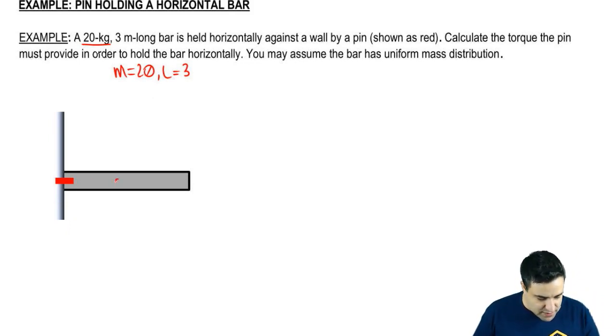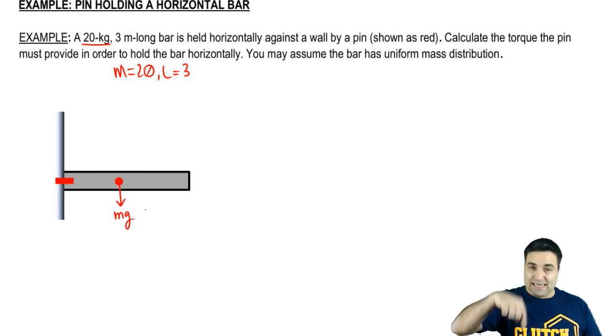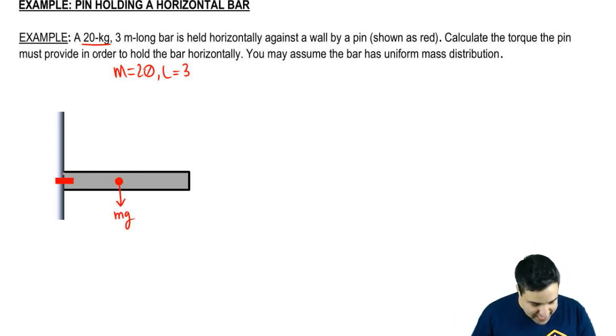The idea is that there's going to be an Mg right in the middle that's pulling the bar down. This is the axis of rotation somewhere over here, axis. And this Mg is producing a torque that would cause this to spin.